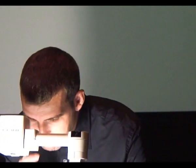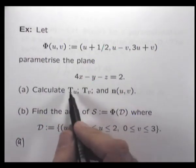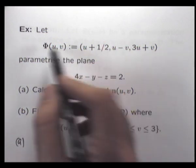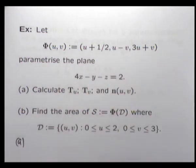All right. So for part A, to calculate the tangent vectors, we just differentiate each component of our parametrization and write it as a new vector.